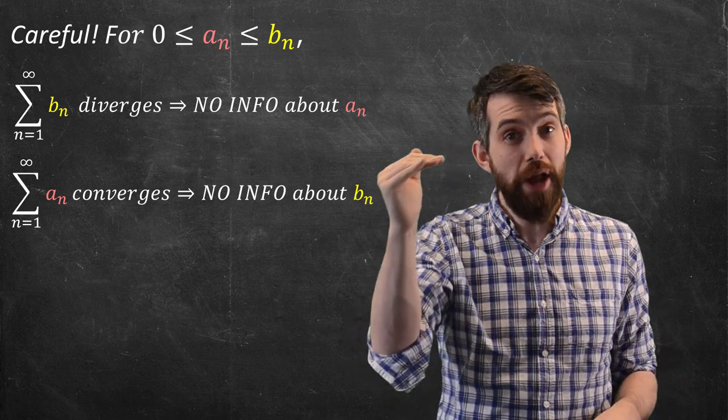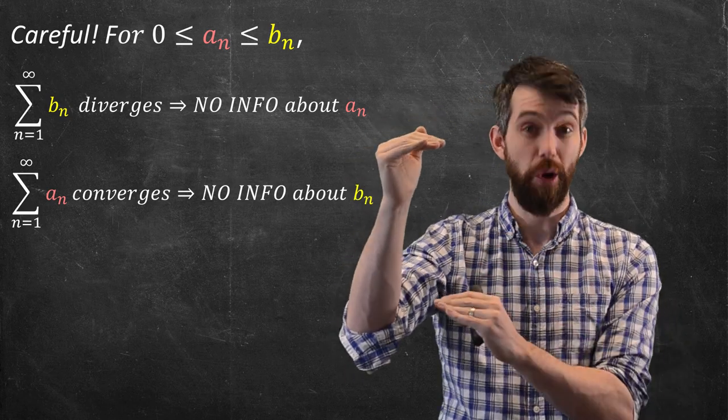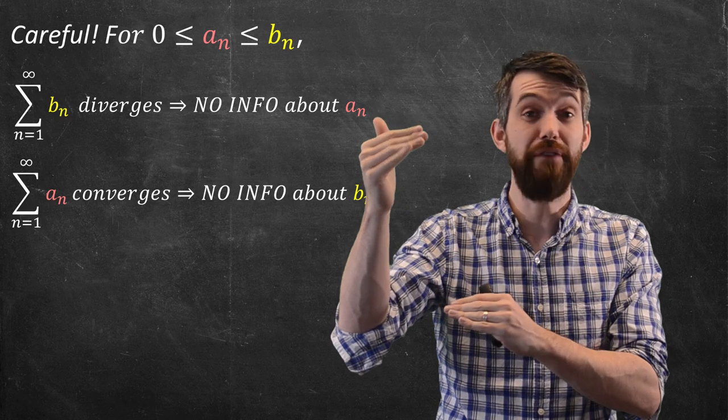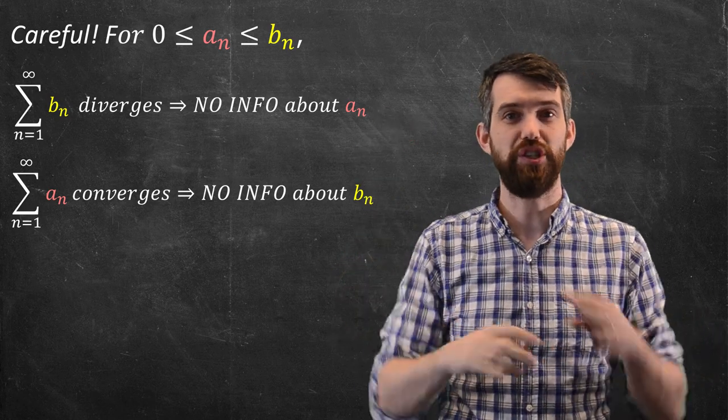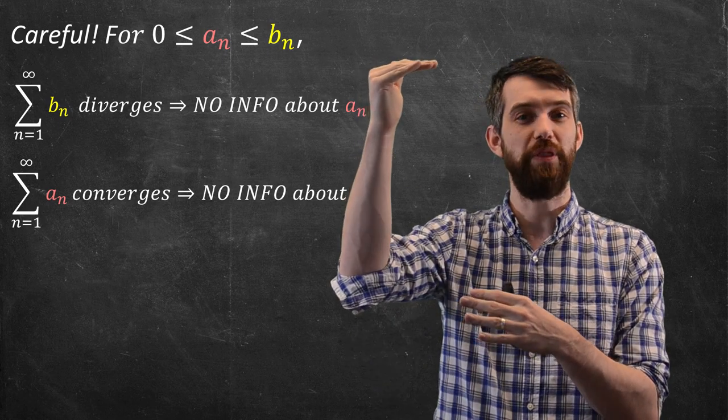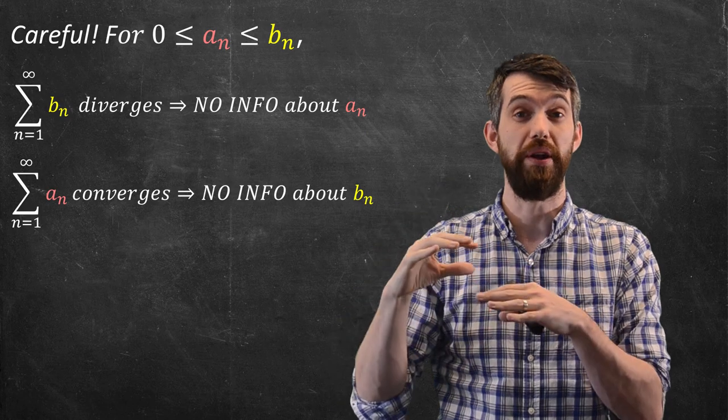So for example, if the larger one diverges, it doesn't tell you anything about what the smaller one does, because the smaller one could converge and something bigger than it could diverge. That's entirely possible. And likewise, if the smaller one converges, well, that doesn't tell you anything at all about the bigger one, because the bigger one could still diverge despite the smaller one converging.